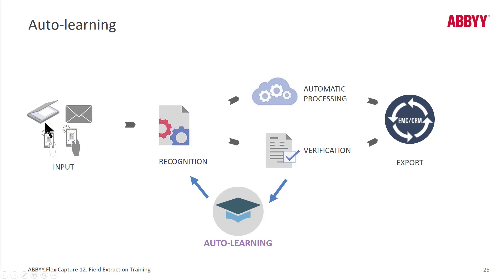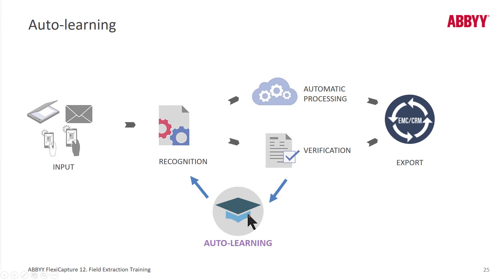The production flow goes like this: images are ingested and recognized. Maybe everything is perfect and the data goes directly to export. Or maybe there's a need for verification, and a verification operator specifies a new location. Usually after export — but possibly after verification — an auto learning step is launched where a training batch is created. So the next document of that type that comes in should have better recognition.